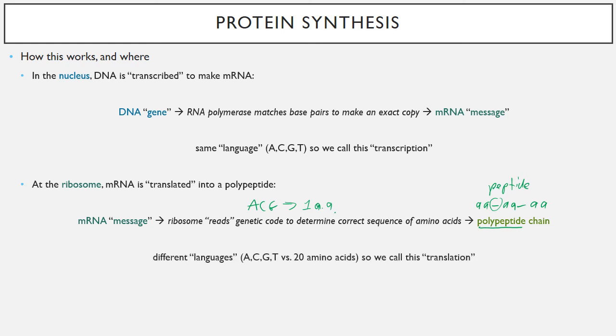Why don't we call it a protein yet? Because the protein is the finished product and we're not quite there yet. In this case, we're using different languages. We start with the ACGT language of DNA or RNA and we're working into the 20 amino acid language of peptide chains. So we call this translation. We're translating from the DNA language to the protein language.